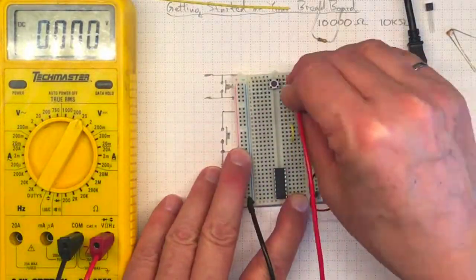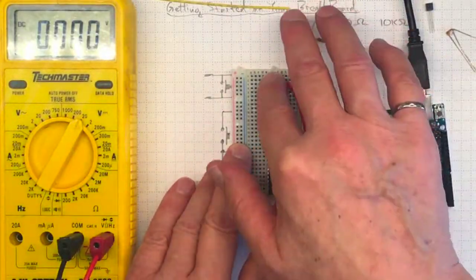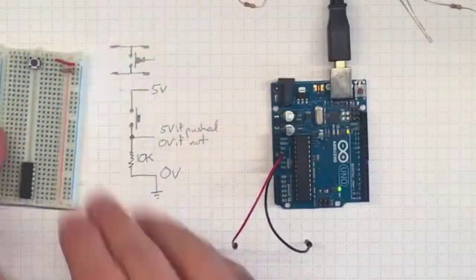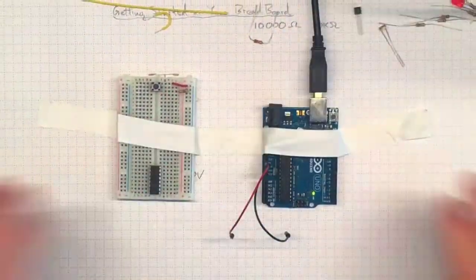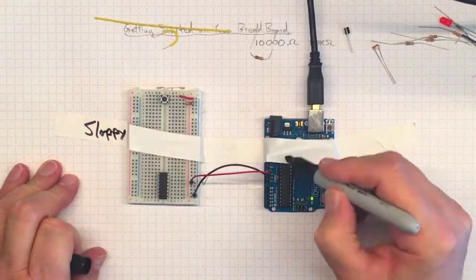Notice how I keep checking with the multimeter to make sure I've got things right. This isn't a good solution for this slip sliding breadboard, but at least it'll solve things for today. Let's try to do better next time.